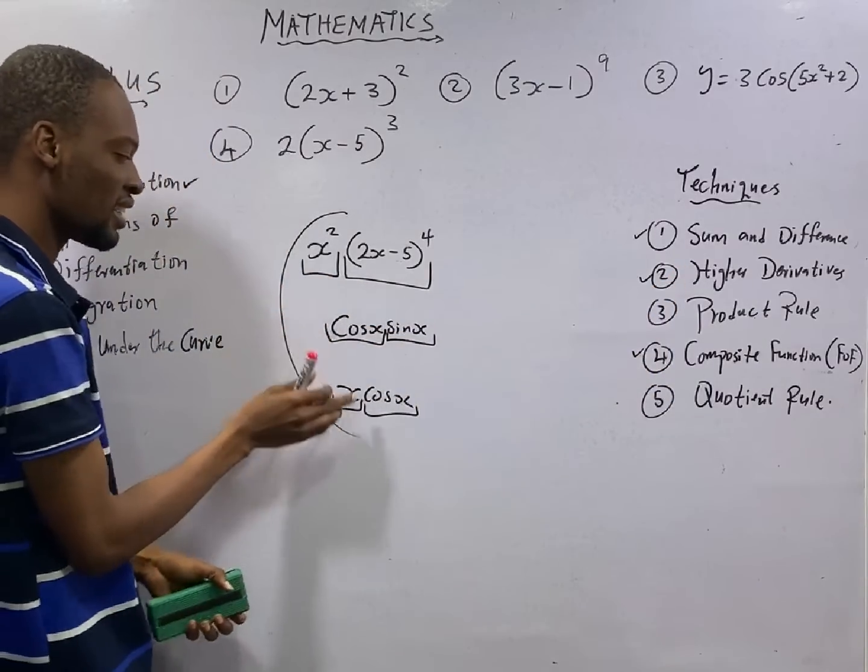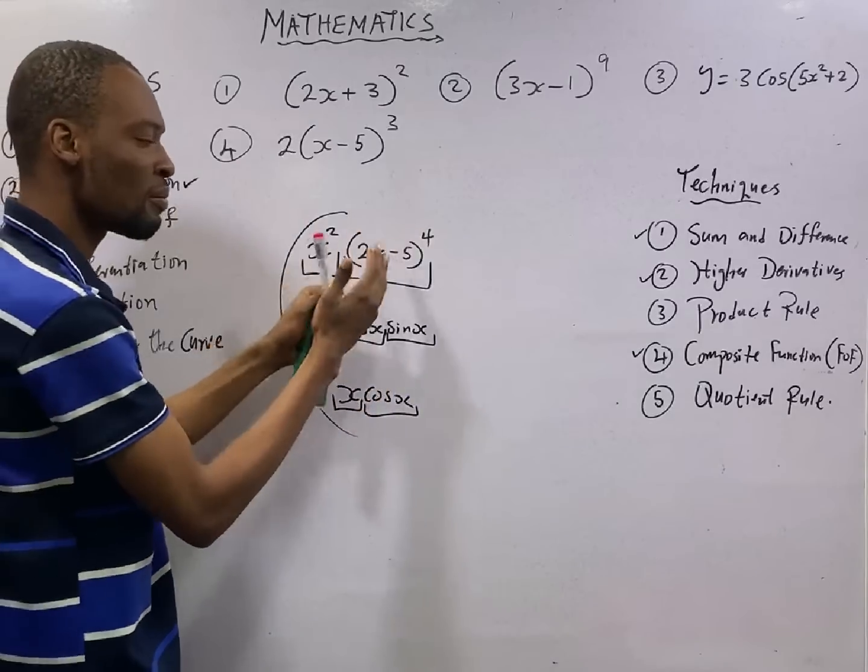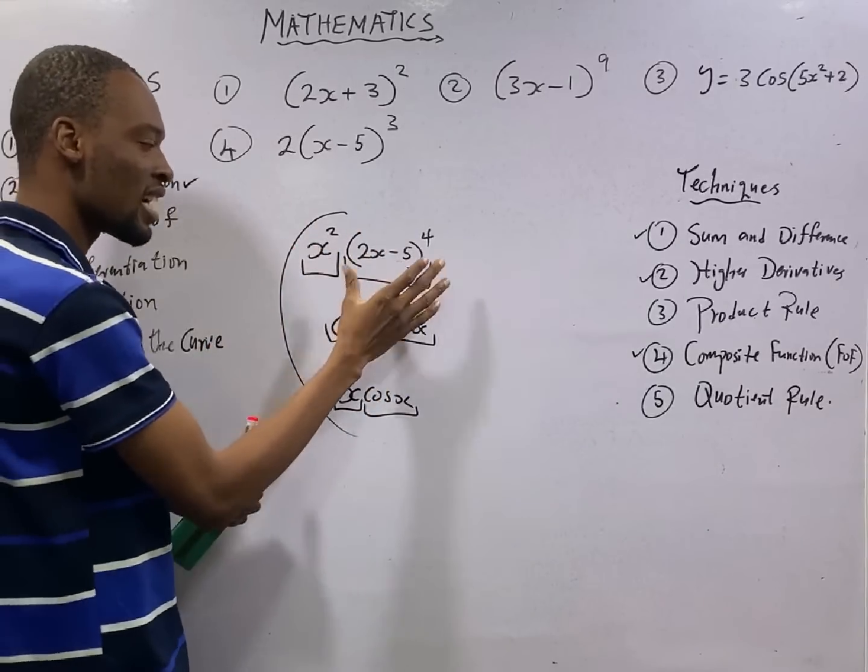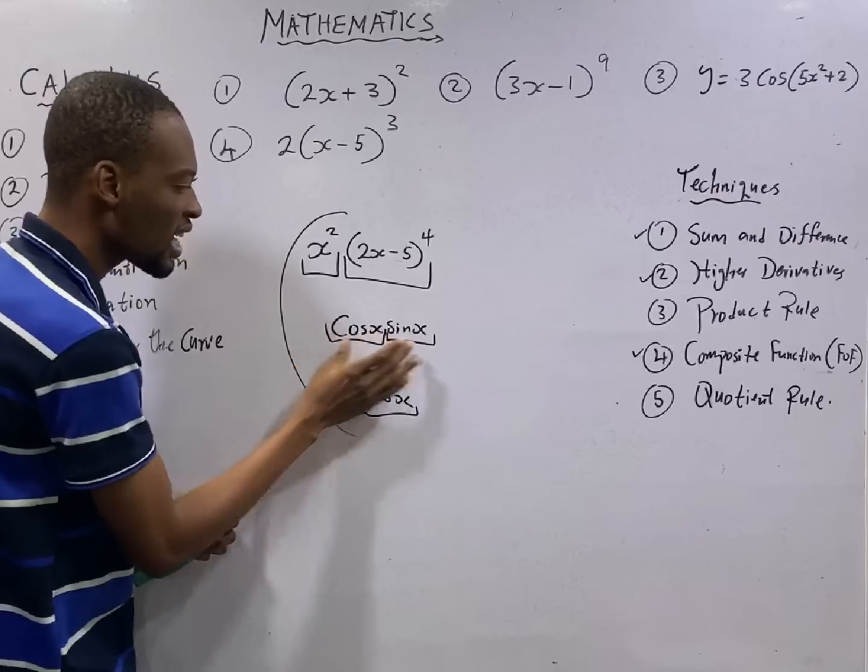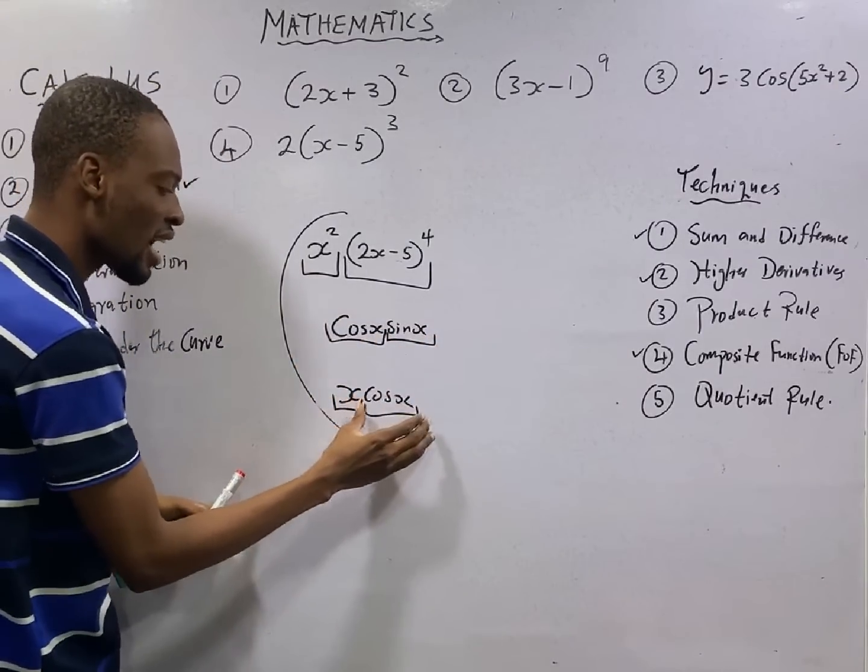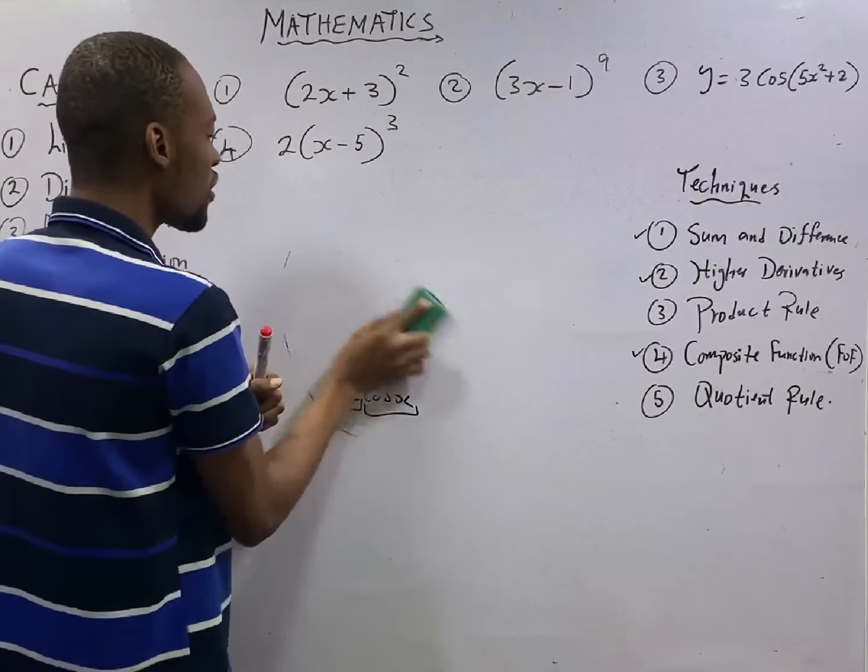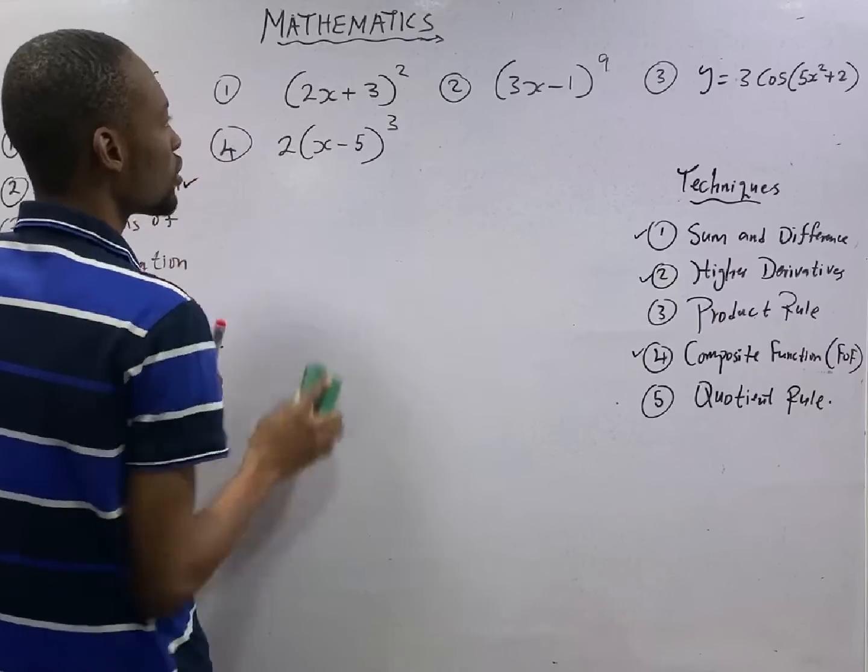For here, here, and here, you apply the product rule. Because two things are being multiplied. This guy and this guy are being multiplied. Cos s and sin s are being multiplied here. Cos s and cos s are being multiplied here. But in this case, it is just a function carrying another function.